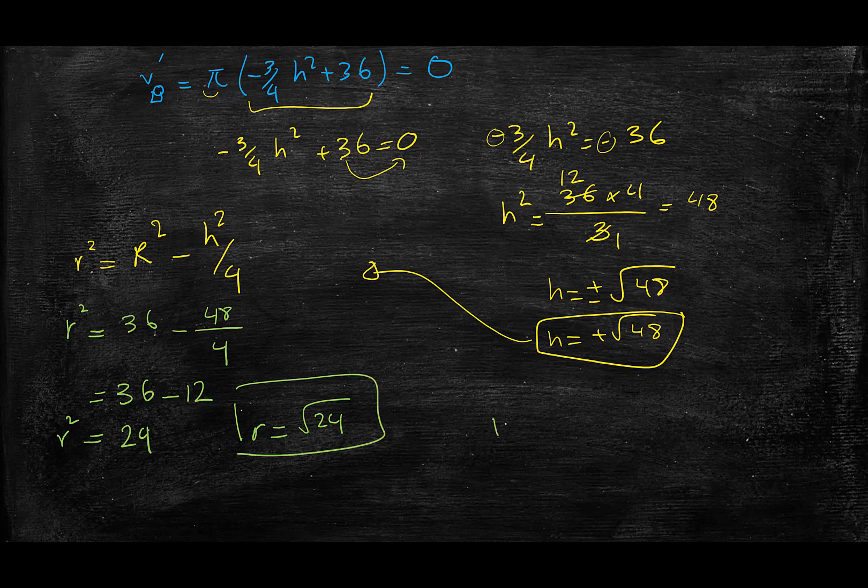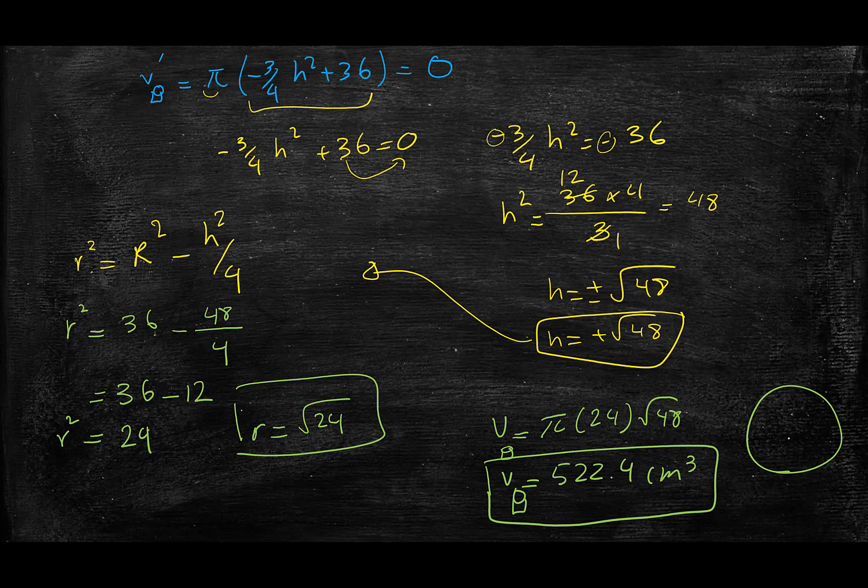My maximum volume cylinder is V = πr²h, so π times 24 times √48. I can do that on my calculator: π × 24 × √48 which gives me 522.4 cm³. That's the maximum volume of a cylinder that I can fit into a sphere with radius R equals 6 centimeters.